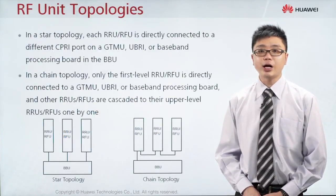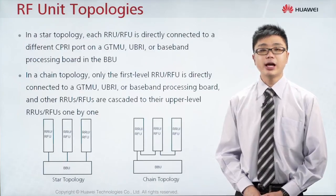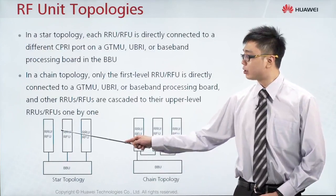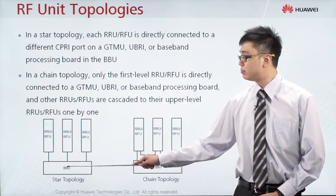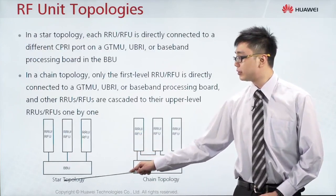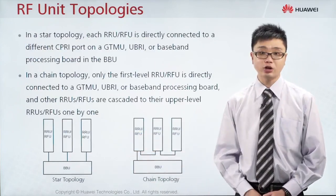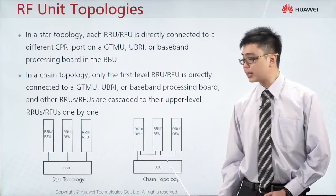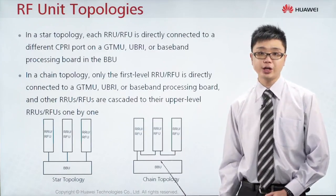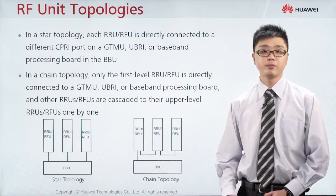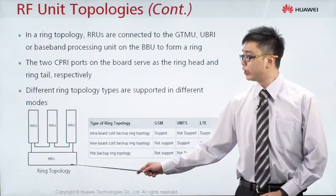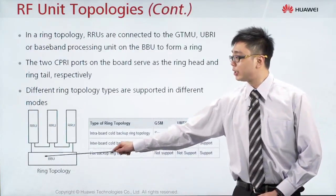The next part will be the RF unit topology — how the RF unit is connected directly to the BBU. As already discussed, the RF can connect directly to the BBU using the first topology, which is star topology, or you can have the second type, which is chain topology.